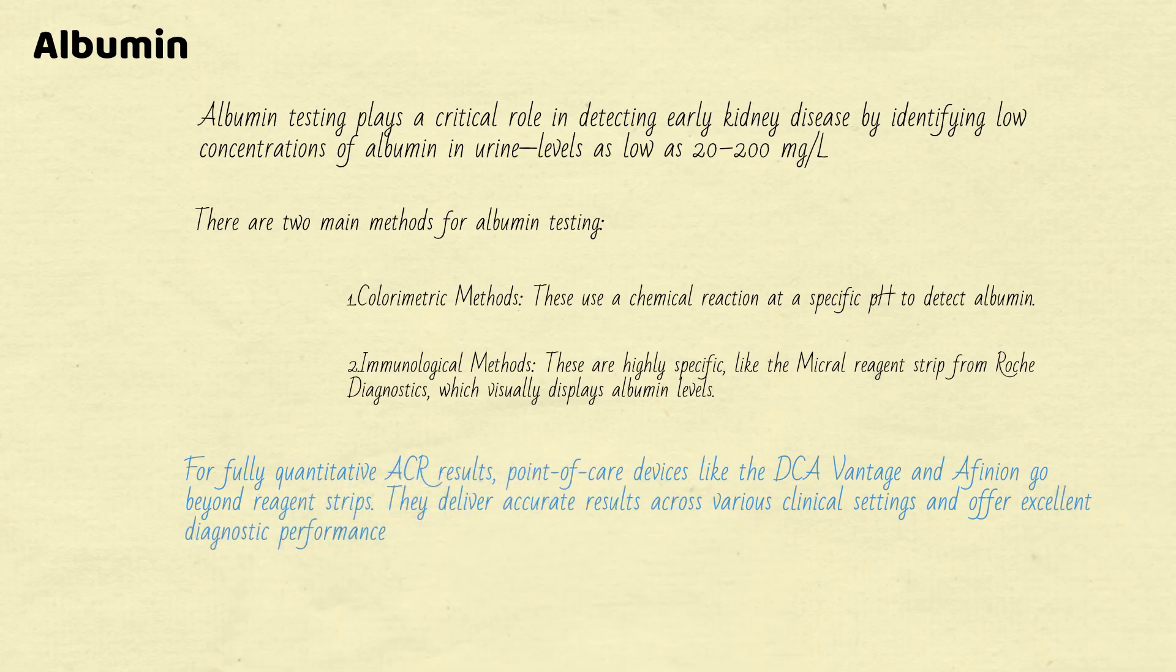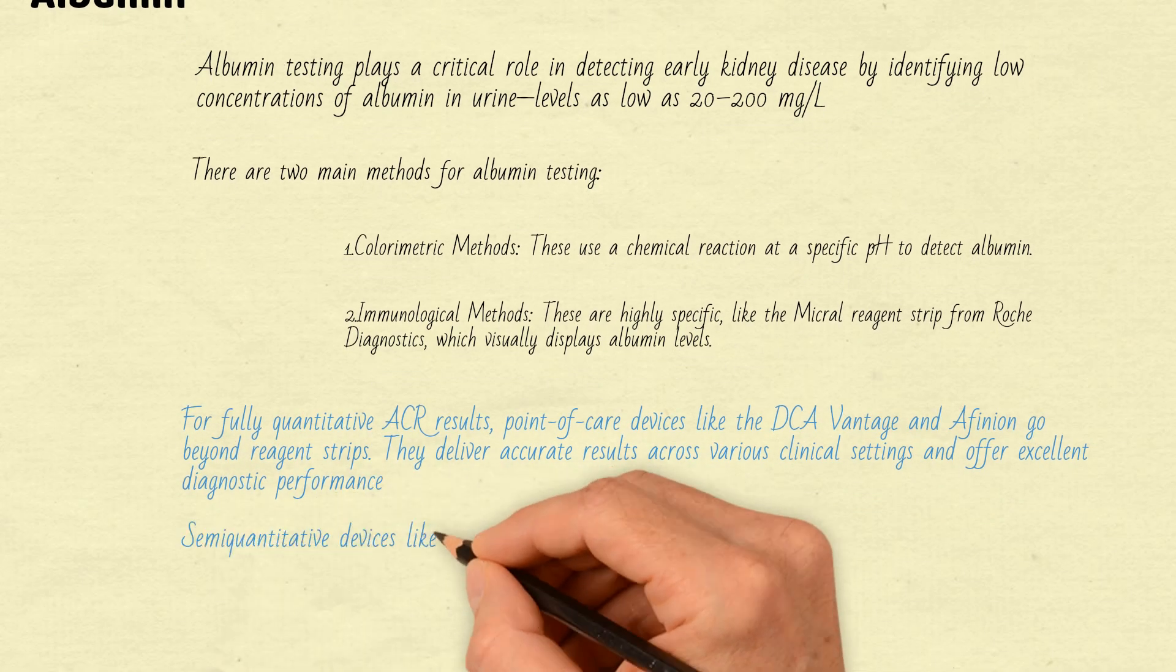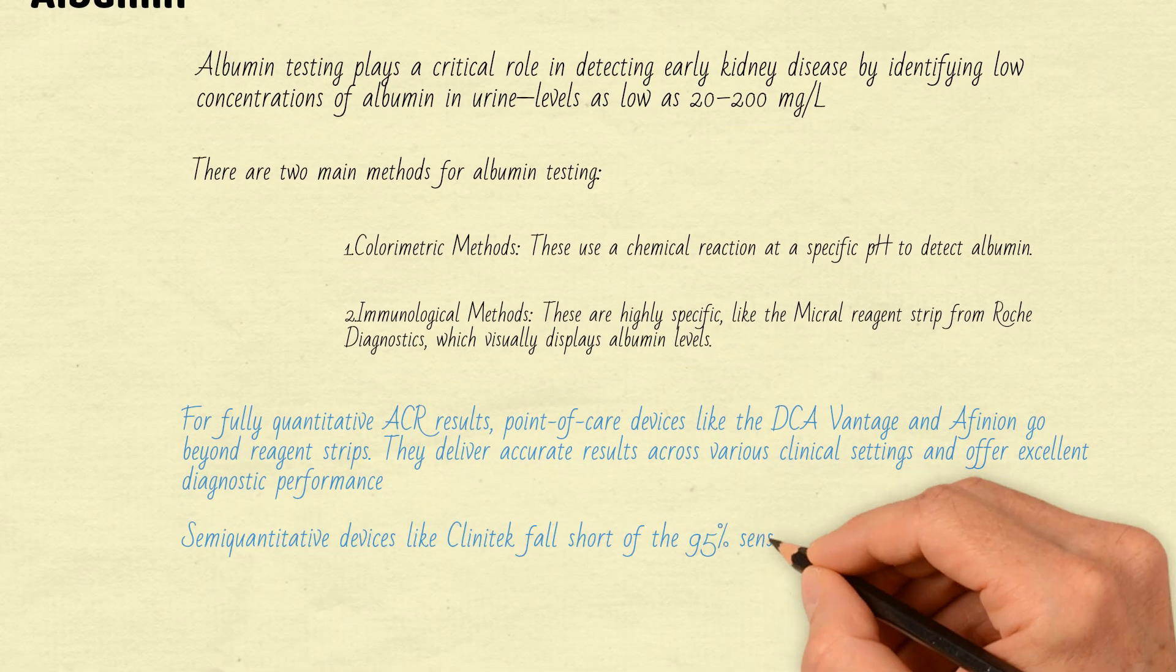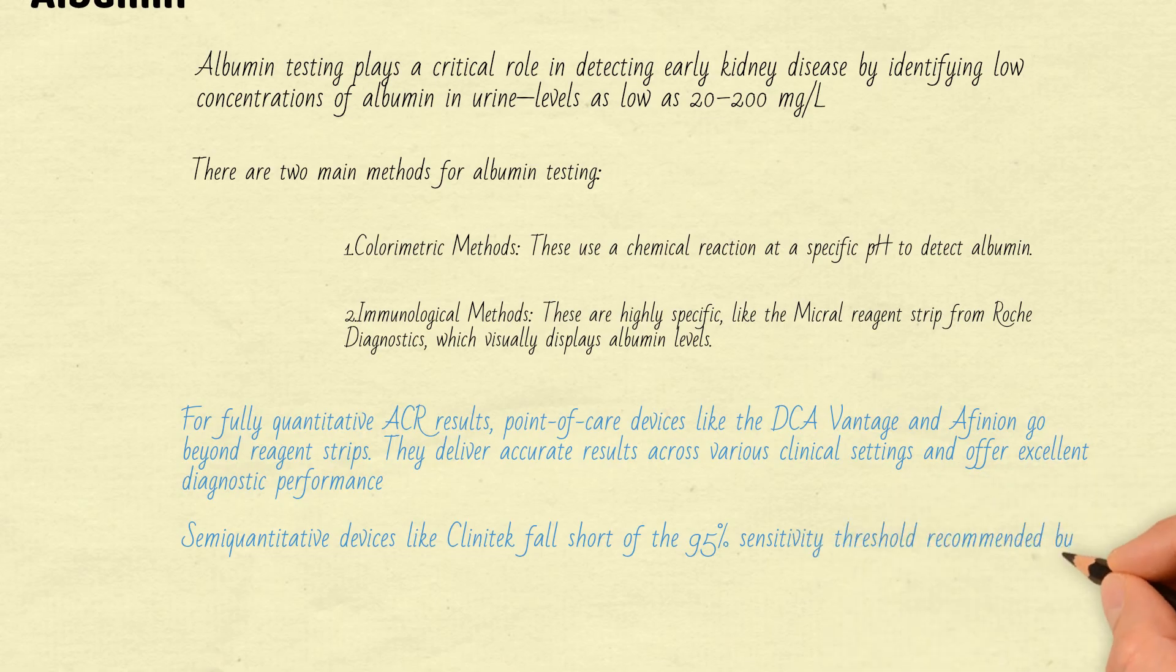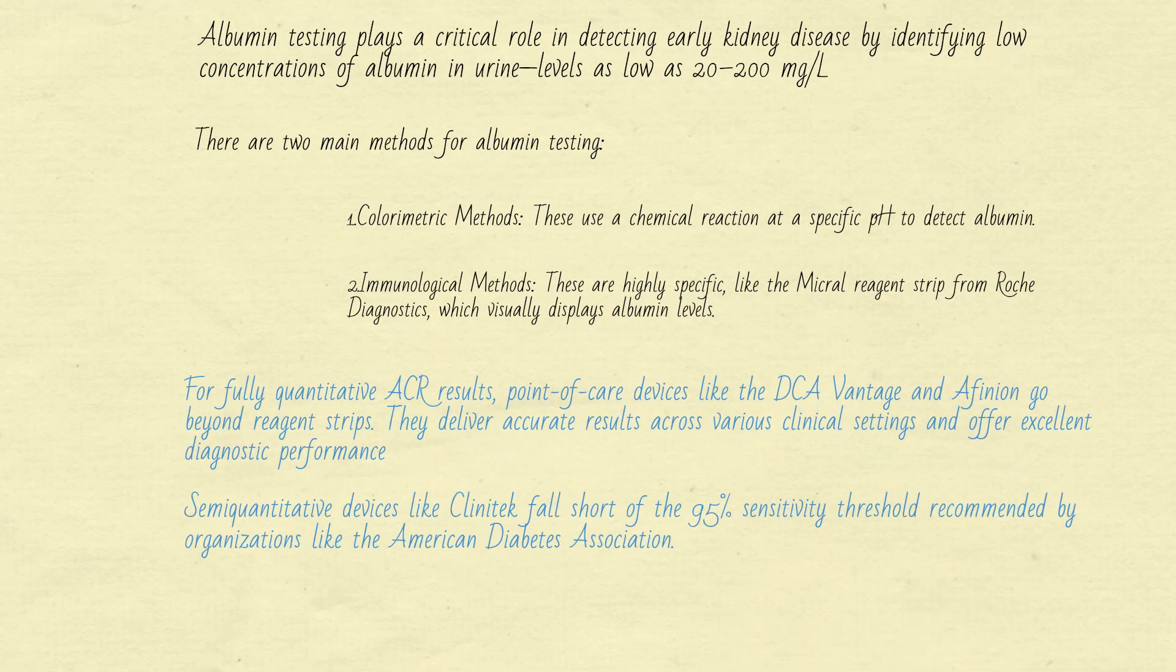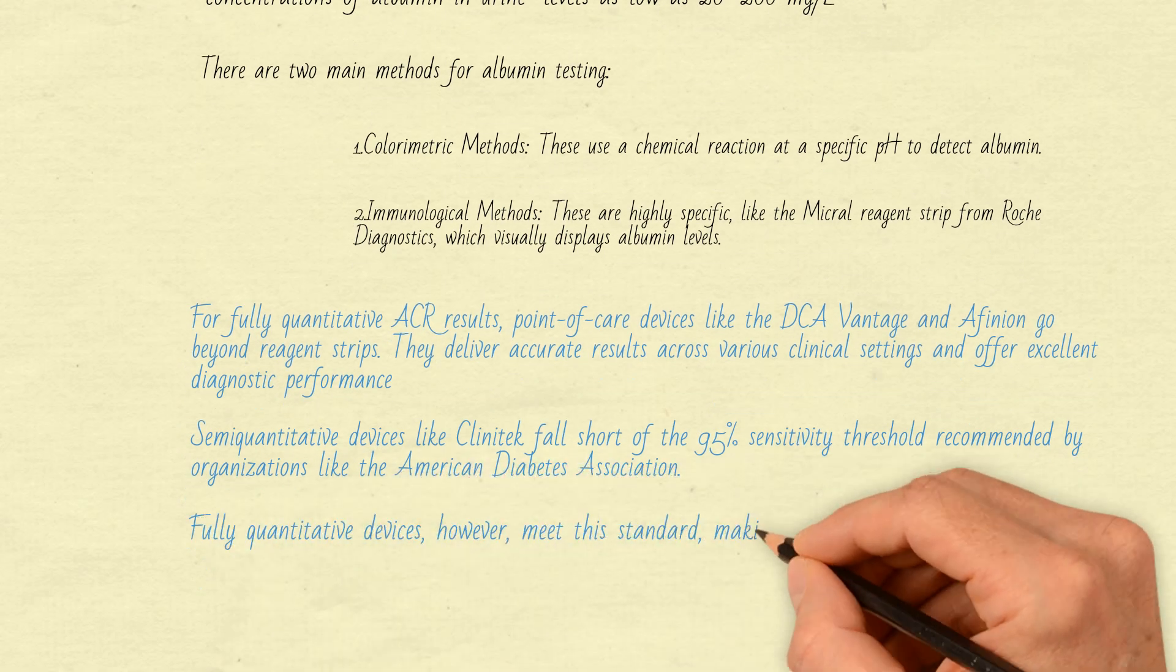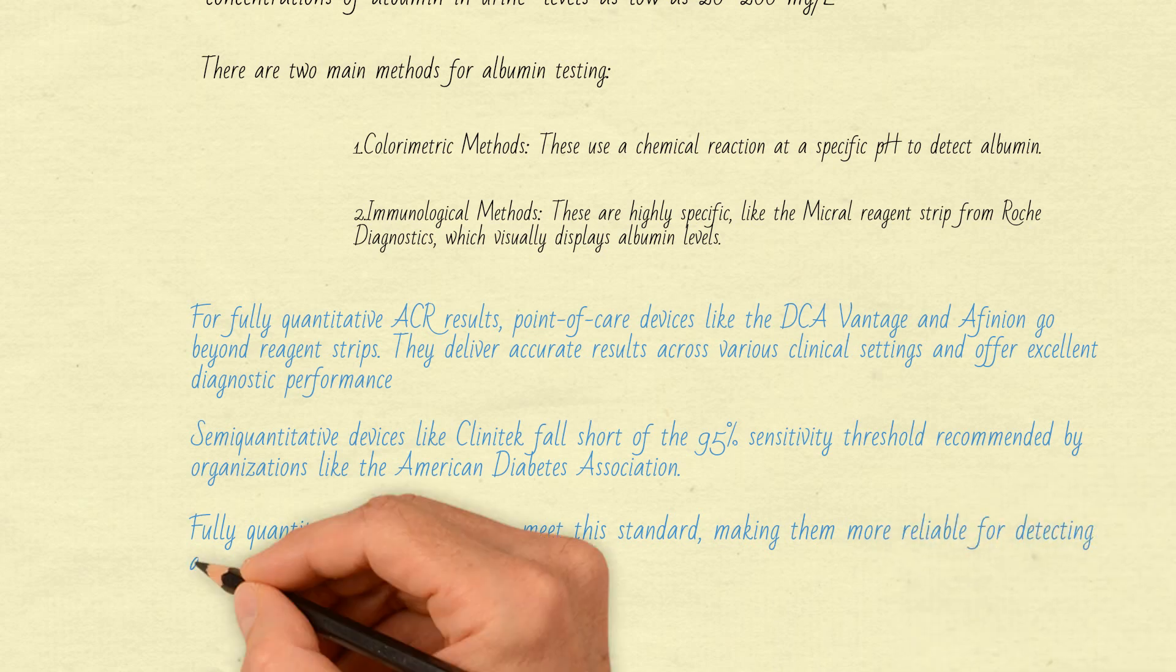But not all methods are equally sensitive. Semi-quantitative devices like Clinitec fall short of the 95% sensitivity threshold recommended by organizations like the American Diabetes Association. Fully quantitative devices, however, meet this standard, making them more reliable for detecting albuminuria.